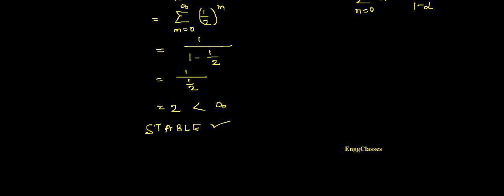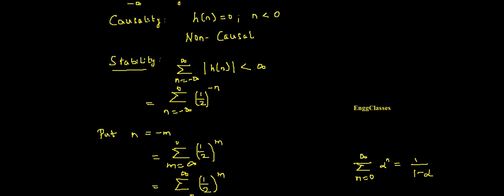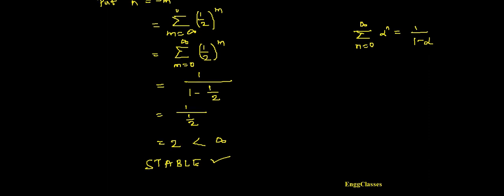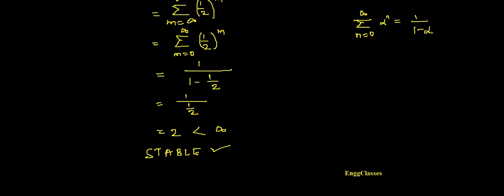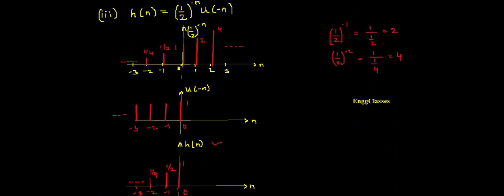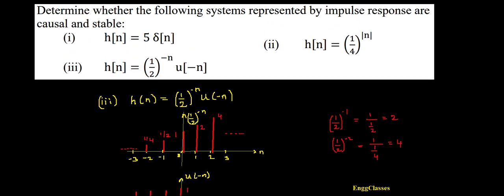So we have tested this system for causality — the answer is non-causal — and for stability — the answer is stable. I hope you have understood. If there are any doubts, please let me know in the comment section and I am happy to answer. Subscribe to our channel NG Classes for more videos. Thank you so much for watching.